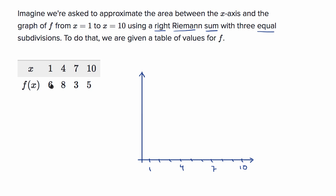When x is one, f is six; and we go to eight, three, five. So let me mark these off on the y-axis up to eight: one, two, three, four, five, six, seven, eight. When x equals one, f of one is six — that's the point (1, 6). Then we have the point (4, 8), right about there. Then (7, 3) on our graph, right over there. And then (10, 5), right over there.